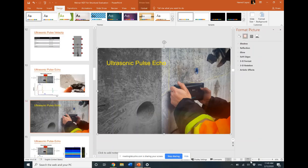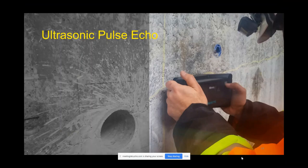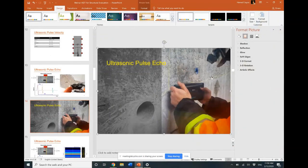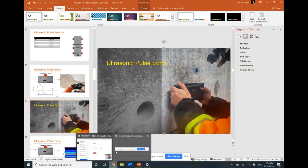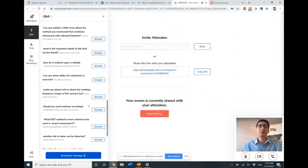Regarding cold joints: the image shown is a cold joint — you can't see a visible crack, but there is a visible boundary between two layers of concrete. In this scenario there was about a two-hour delay between the old batch and the new batch, and apparently the first layer had already set. There are bonding agents that can be used when joining two layers of concrete while they are still in plastic condition, which can help avoid such problems.